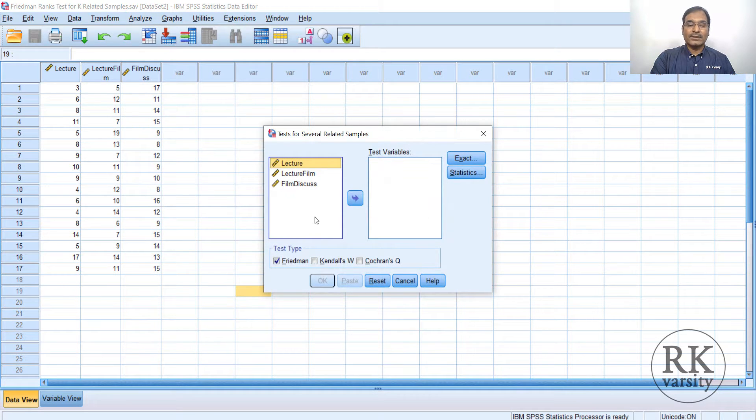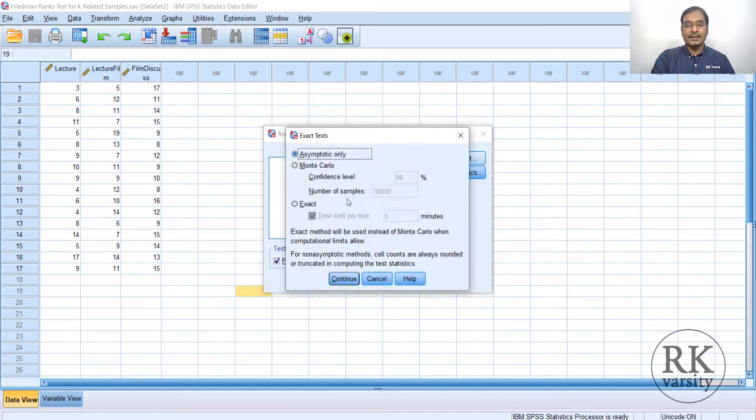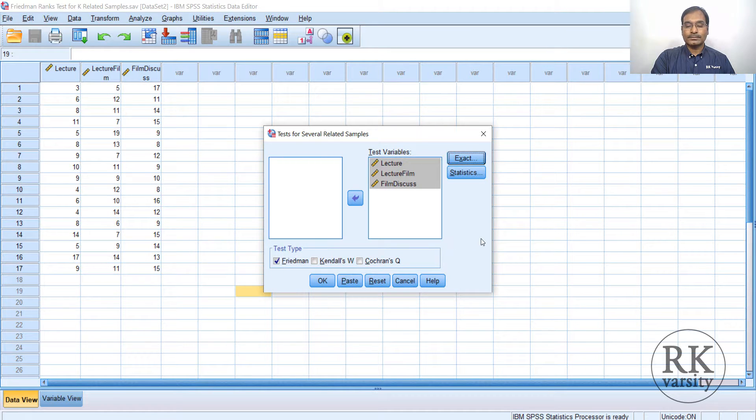So here you have K-Related Samples. Now here you have three methods, lecture methods. Select all the three by holding Control and clicking. Then send them to the test variables. And here by default, test type is Friedman's test, so retain this one. Then go to Exact, and here in Exact, select the Exact option. Click Continue, then finally click OK.